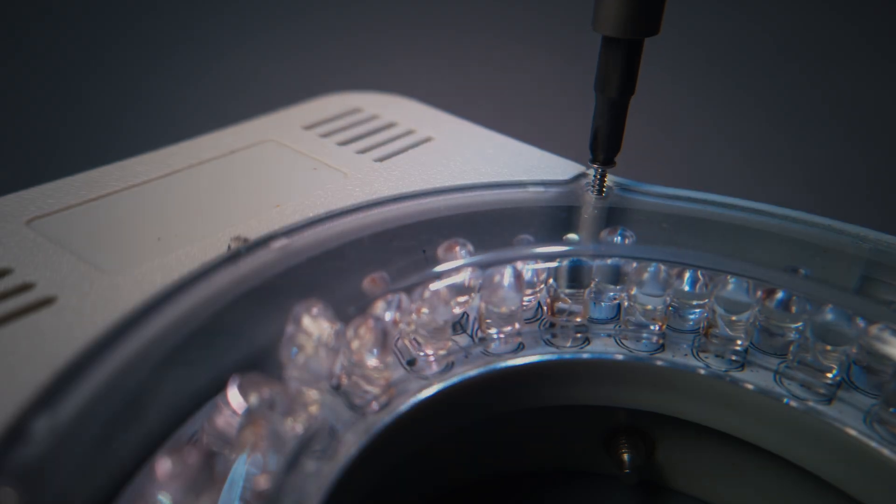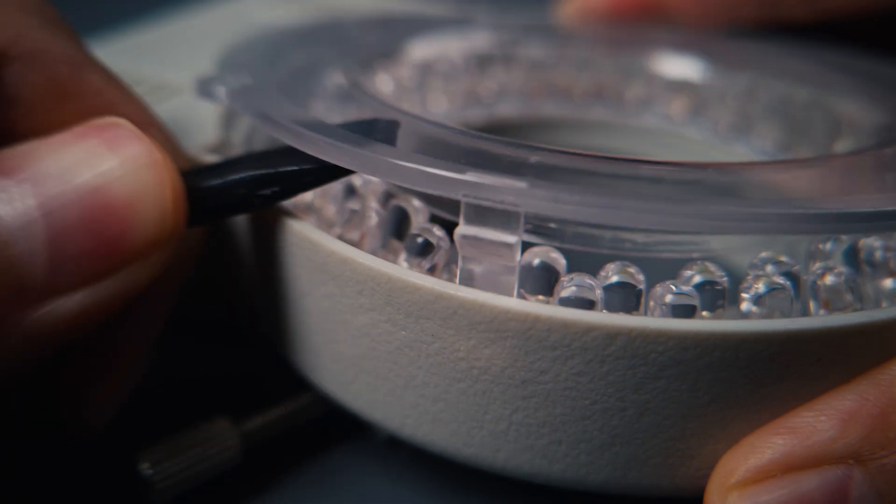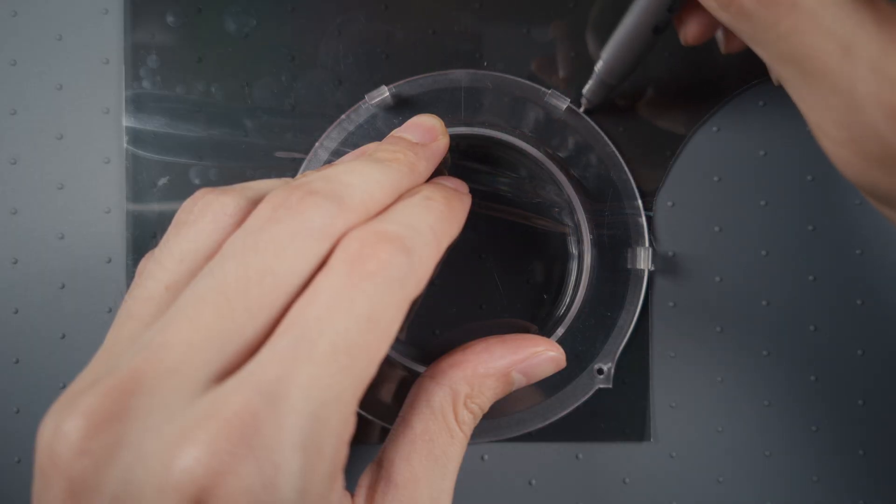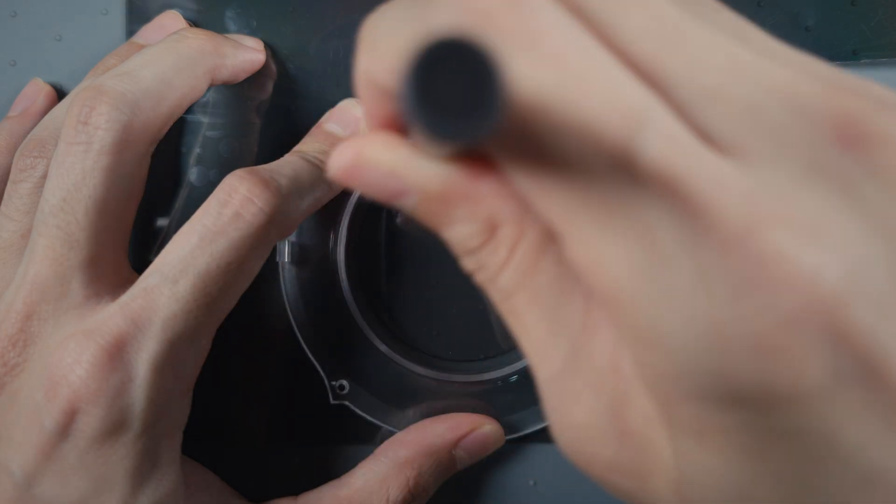First, take the screws out of the lamp, then pop the cover out. Using the cover as a template, mark and cut a circle out of the polarizer film.